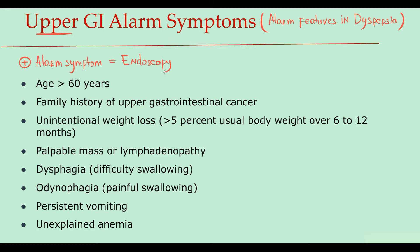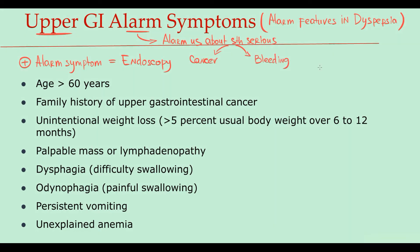The reason why we call them alarm symptoms is that they alarm us about something serious. And generally there are two conditions that we are afraid of — it's cancer and bleeding. As we look at upper GI symptoms, most of them alarm us exactly about cancer.